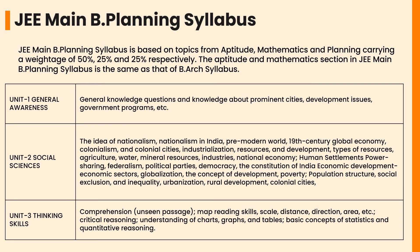In Unit 1, General Awareness, the topics include general knowledge questions and knowledge about prominent cities, development issues, government programs, etc. In Unit 2, Social Sciences, the topics include the idea of nationalism, nationalism in India, pre-modern world, 19th-century global economy, national economy, human settlements, power sharing, federalism, political parties, and democracy. In Unit 3, Thinking Skills, the topics include comprehension and unseen passages.